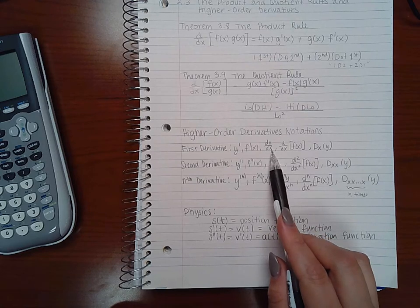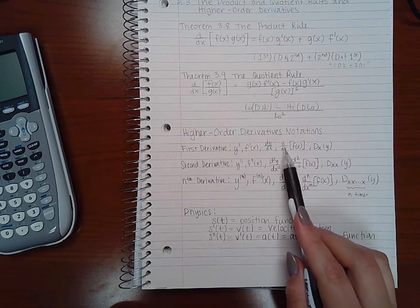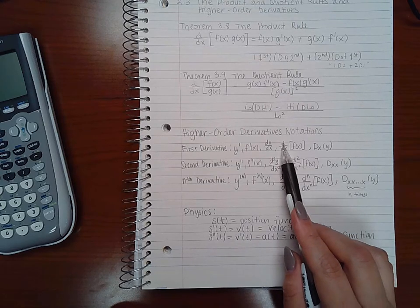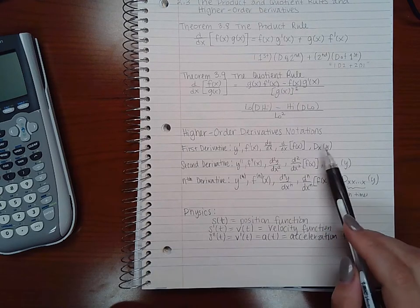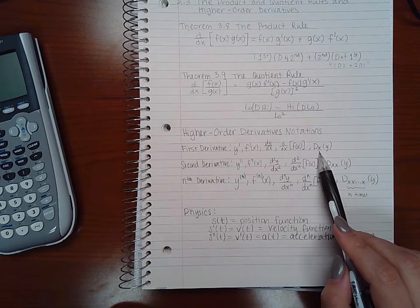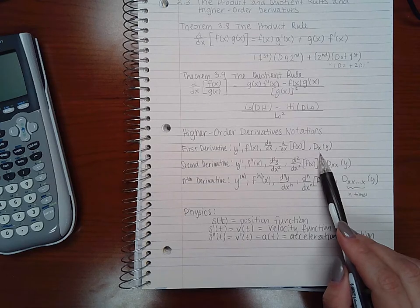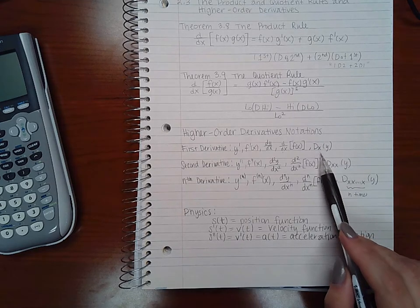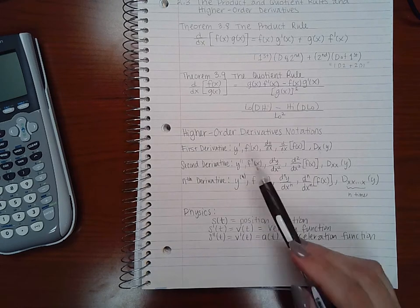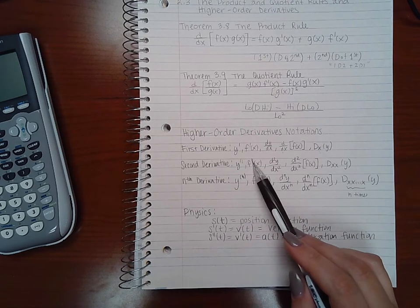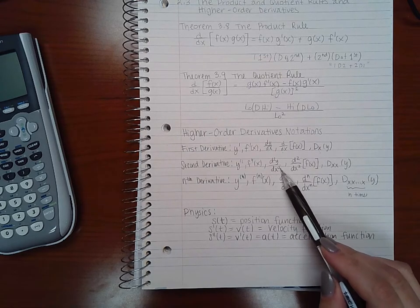When we say dy/dx, that means we're taking the derivative of y with respect to x. Or if we say df/dx, we're taking the derivative of this function with respect to x. Another notation that we haven't seen is this, where it's the derivative of y with respect to x. We also have here the second derivative notation. That's y double prime or f double prime of x. Or d²y/dx².